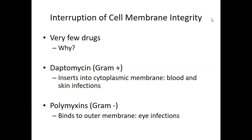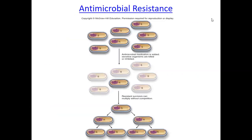Daptomycin inserts into the cytoplasmic membrane, wedging its way in, which disrupts the membrane. This can be used for blood and skin infections. Skin infections make sense because if it's topical, it won't have a systemic effect like an oral antibiotic would.